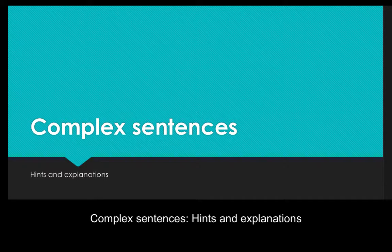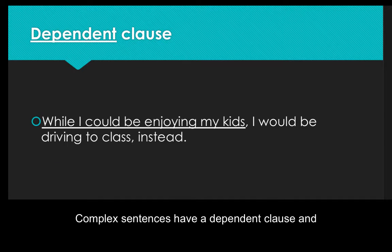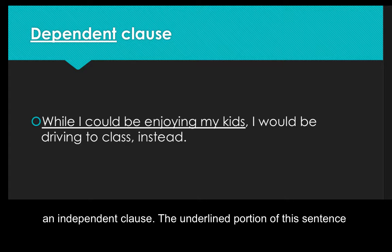Complex Sentences: Hints and Explanations. Complex sentences have at least two verb phrases in them, but what does that mean? Complex sentences have a dependent clause and an independent clause.